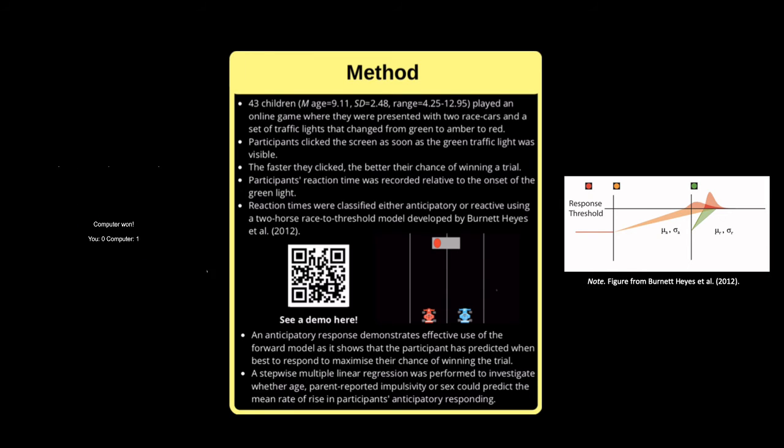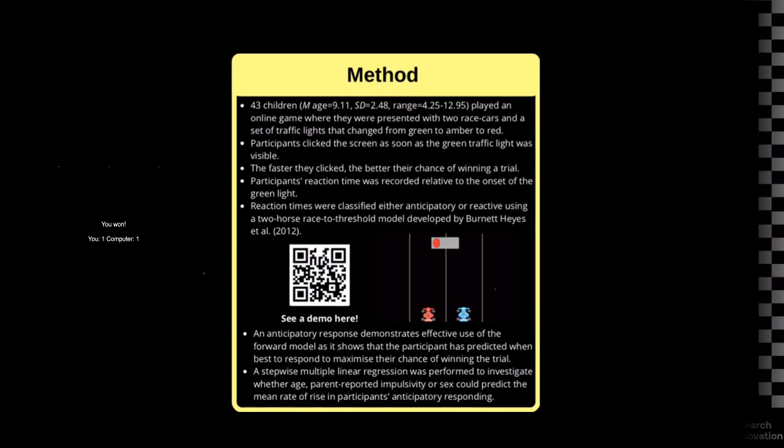Producing an anticipatory response demonstrates effective use of the Forward Model as it shows that participants predicted when best to respond to maximize their chance of winning a trial. A stepwise multiple linear regression was performed to investigate whether age, parent-reported impulsivity, or sex could predict the mean rate of rise in participants' anticipatory responding.